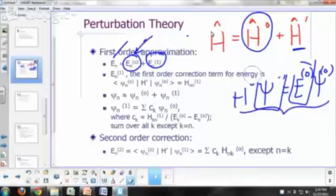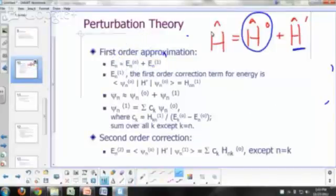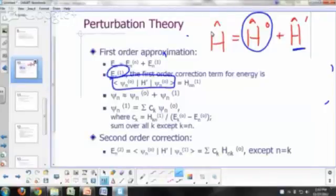And what we said last time is that you can show that the first-order correction term for the energy will just be equal to this integral right here. So it's psi sub n naught h prime psi sub n naught integral—psi sub n naught, and then you have h prime operating on psi sub n naught integrate over all space,